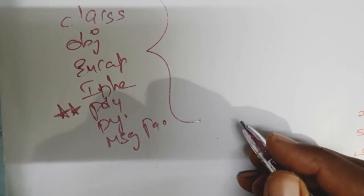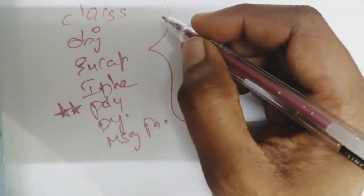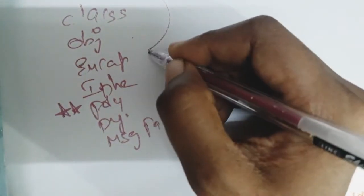These are all the object-oriented concepts: class, object, encapsulation, inheritance, polymorphism, dynamic binding, and message passing.